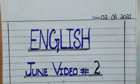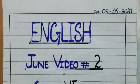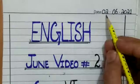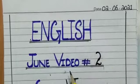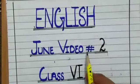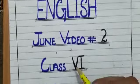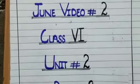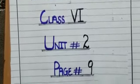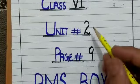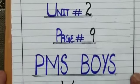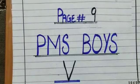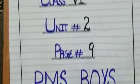Bismillah ar-rahman ar-rahim. Assalamu alaykum everyone, I hope everyone is fine and doing well. Dear students, today is 2nd June 2021. This is your English class and this is the second video of the month of June for Class 6. Today we are going to discuss the words meanings and word sentences of Unit Number 2, Page Number 9, and also we are going to make the title page for Unit Number 2.